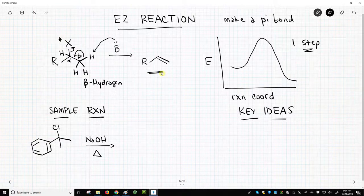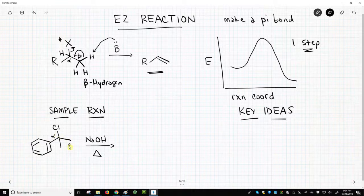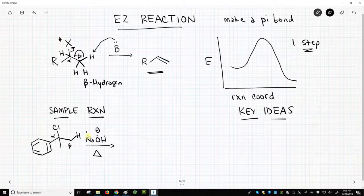So let's see a sample reaction of this. Here's a nice, strong base. Sodium hydroxide is reacting with an alkyl halide, and here's our alpha position. Here's our beta position. There is our beta hydrogen, and I could have drawn more than that, but here's our hydroxide.